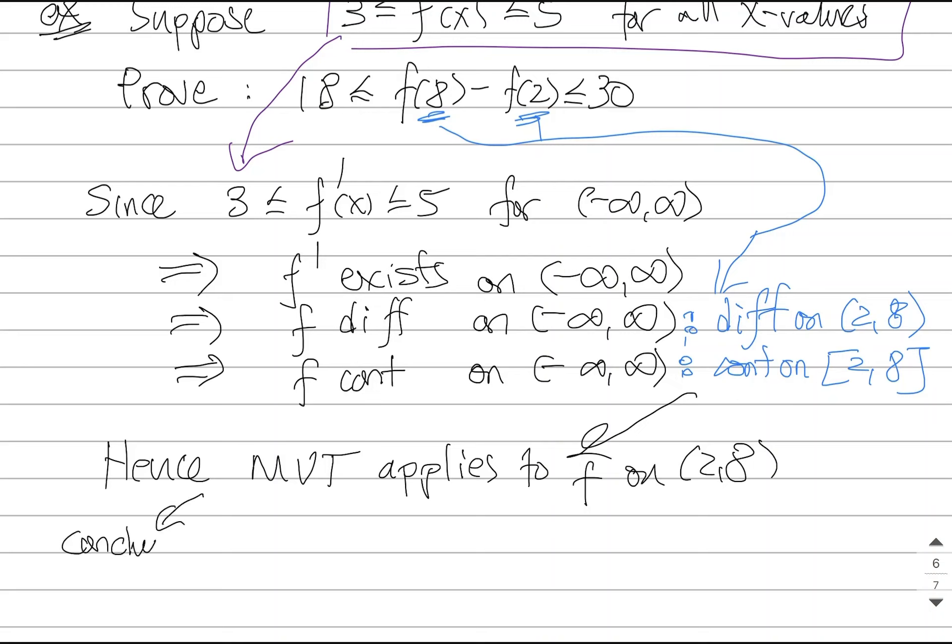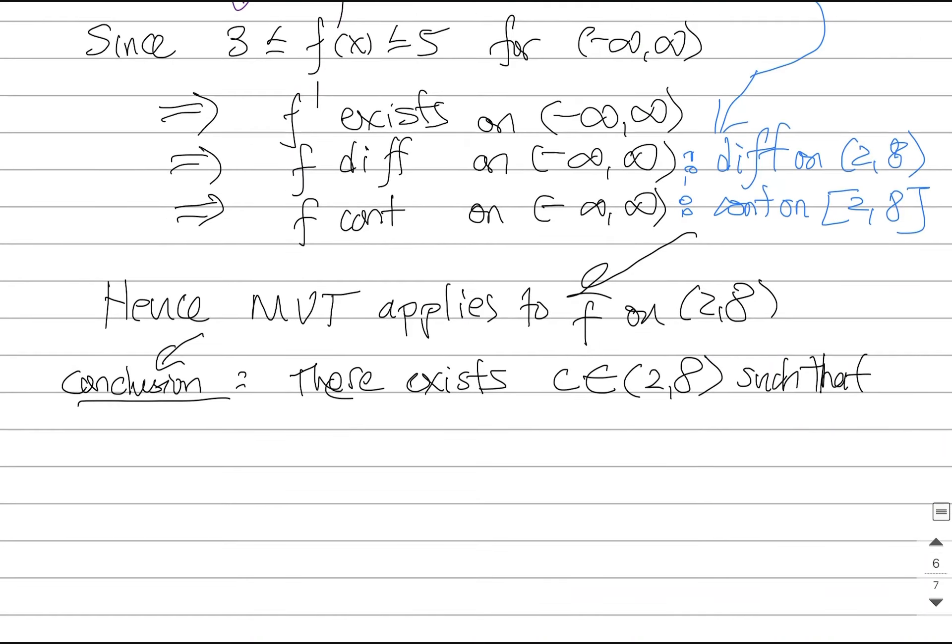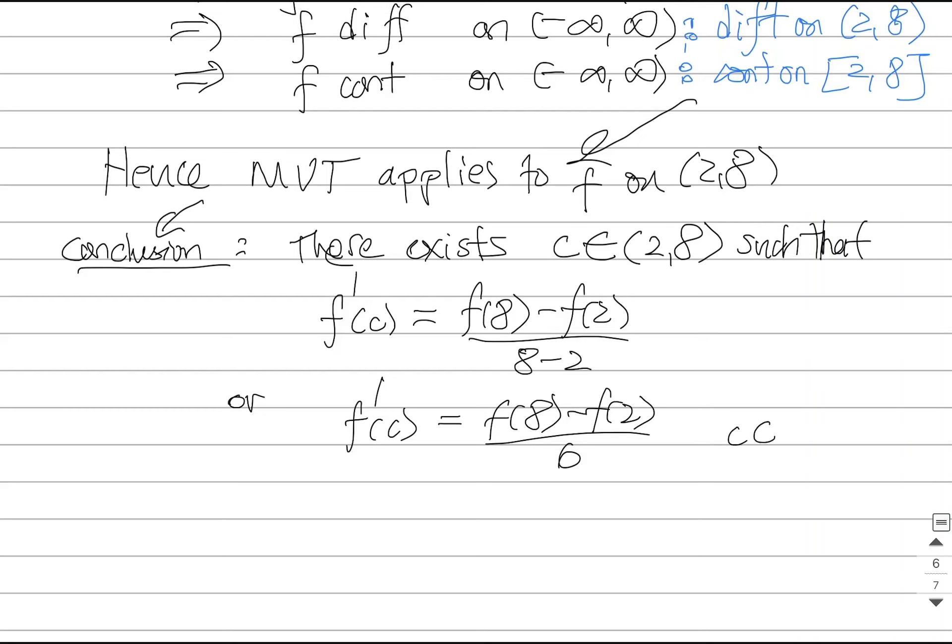Because of that, I now get to say, look, the mean value theorem applies to my function on the interval 2 to 8. And the conclusion of the mean value theorem says, there has to exist some value of C that lives between 2 and 8 such that the following is true. The conclusion of the mean value theorem says your magical point C has to satisfy this relationship. There is a point C that must make this equation true. Or, another way to put it, that f prime of C is f(8) minus f(2) over 6. And the only thing I have is that C is somewhere between 2 and 8. Can't be 2, can't be 8, but it could be anything in between.